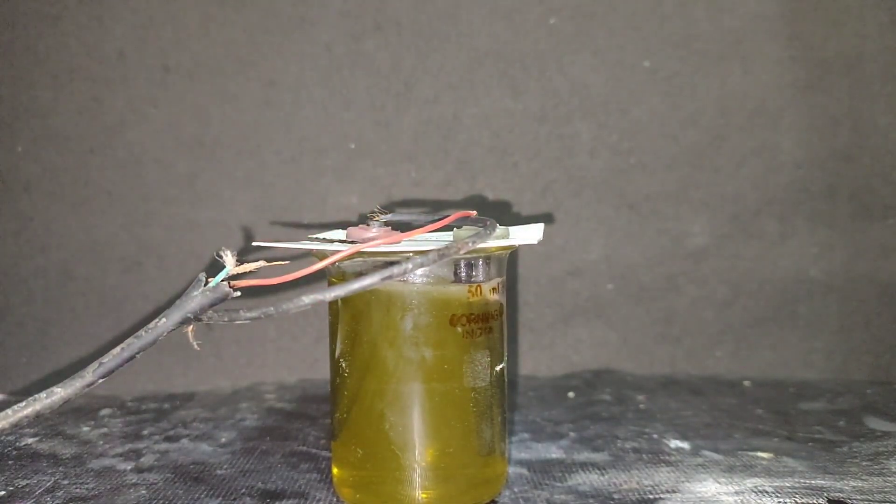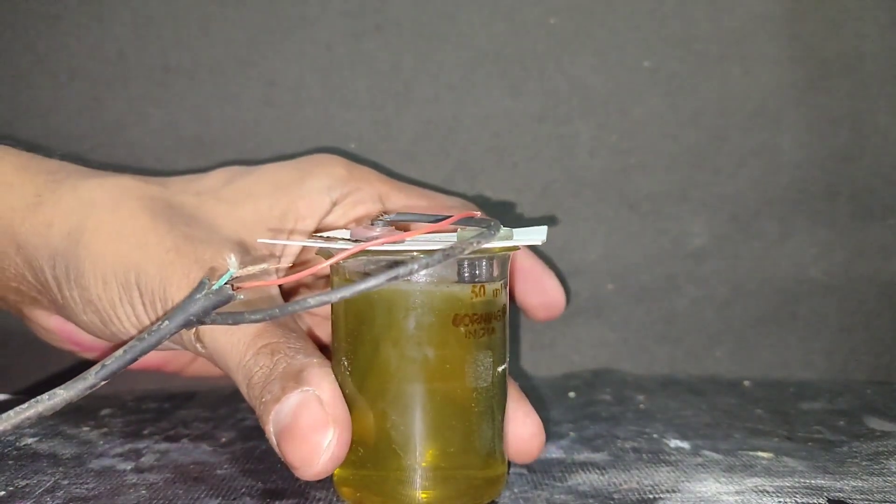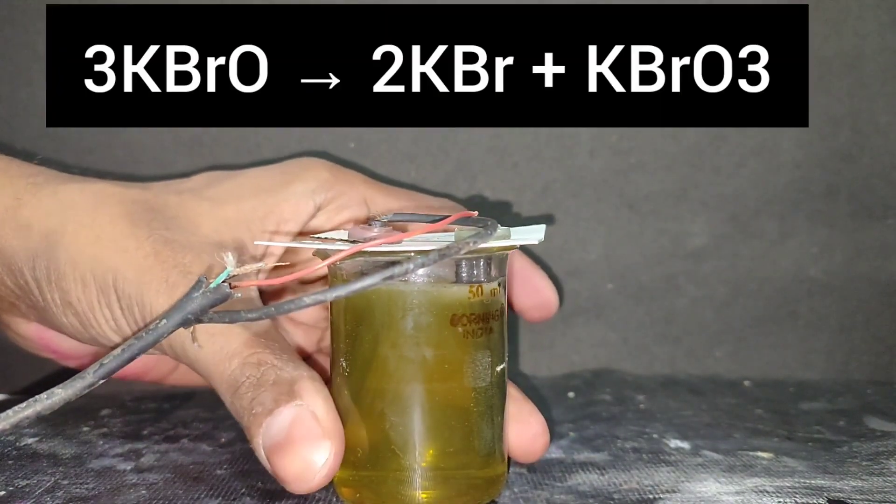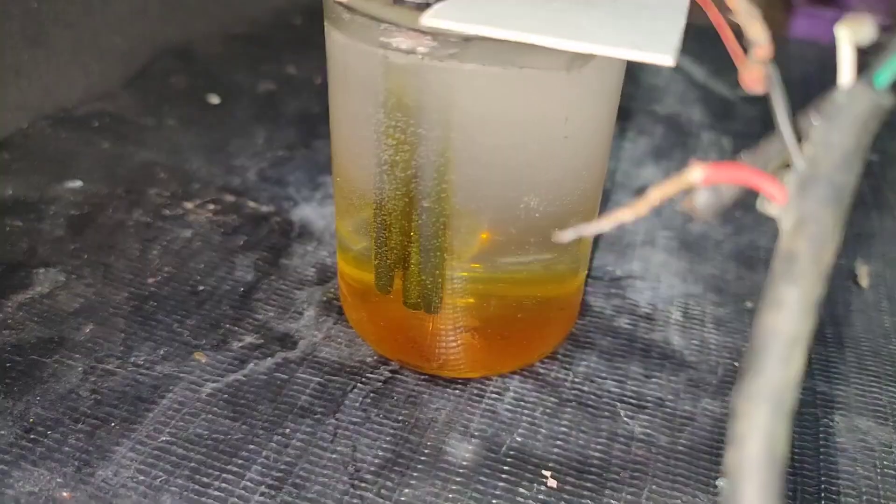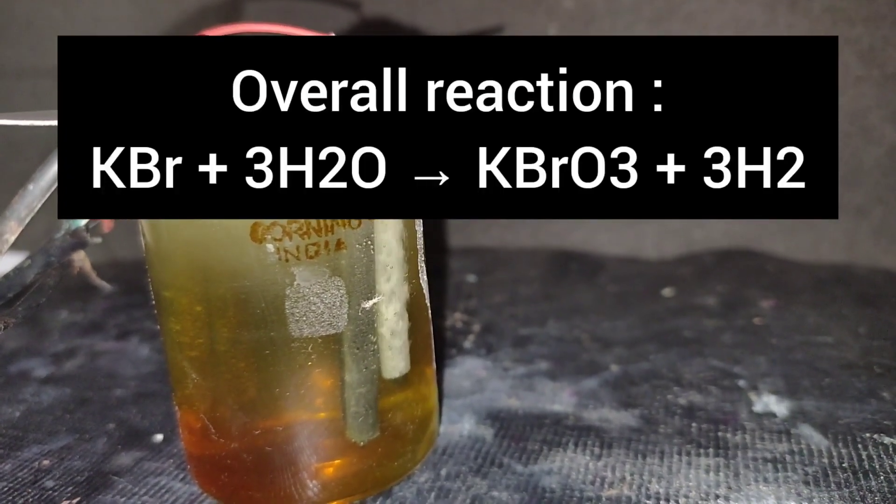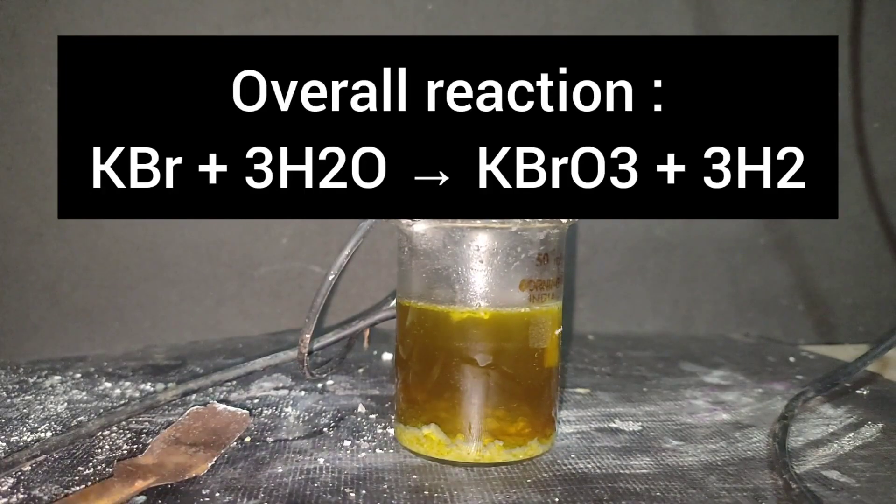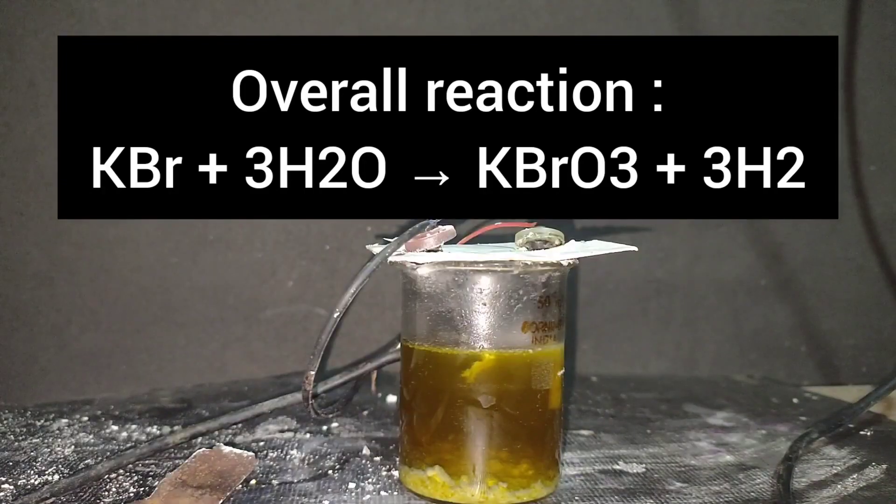Now as the concentration of potassium hypobromide will increase, the potassium hypobromide will disproportionate into potassium bromide and potassium bromate. And due to lower solubility of potassium bromate in cold water, the potassium bromate will settle in the bottom of the solution.